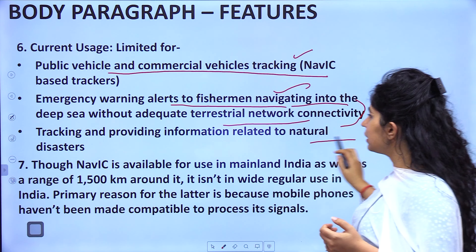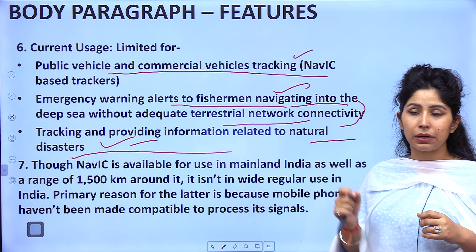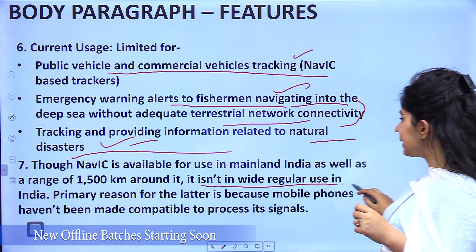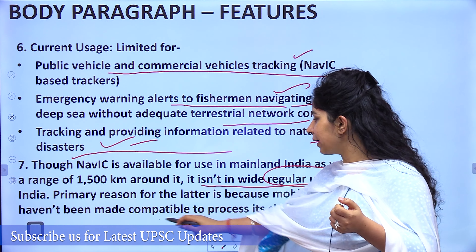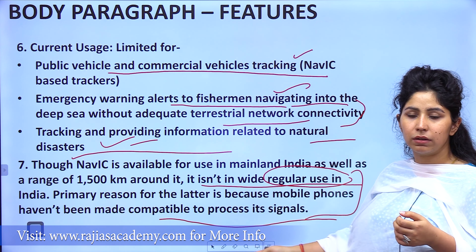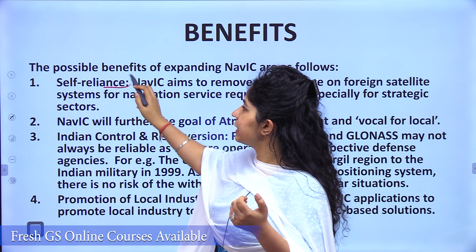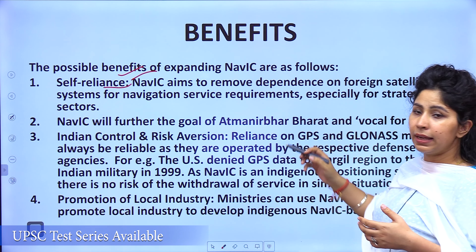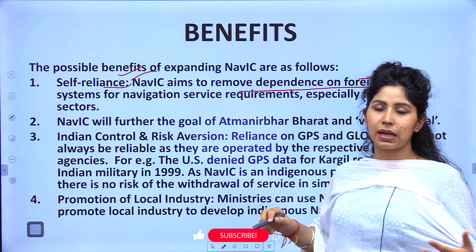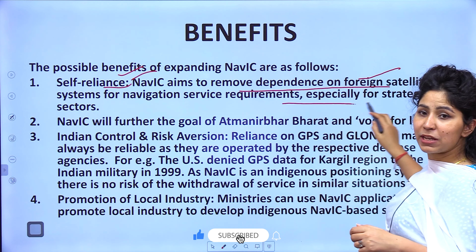Toward the end of the features section, we should highlight current limitations. Current usage has been limited to public and commercial vehicle tracking, emergency alerts to fishermen navigating into the deep sea, and tracking information related to natural disasters. A key problem is that though NAVIC is available for mainland India and 1,500 kilometres beyond its borders, it is not in wide regular use because most mobile phones and devices do not have NAVIC chips or NAVIC-enabled software, meaning they cannot process NAVIC signals.